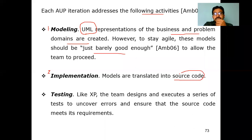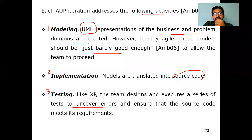The second activity is implementation: whatever is done in modeling is converted into source code. The third activity is testing. Like in Extreme Programming (XP), we have unit testing and acceptance testing — also called user acceptance testing. The team designs and executes a series of tests to uncover errors and ensure the source code meets its requirements, verifying that for a given input the expected output is produced.